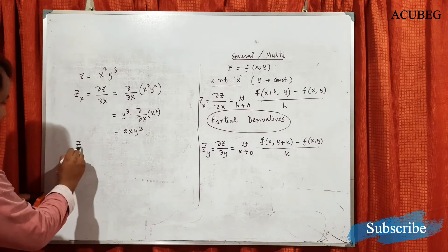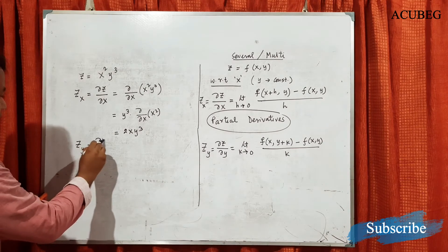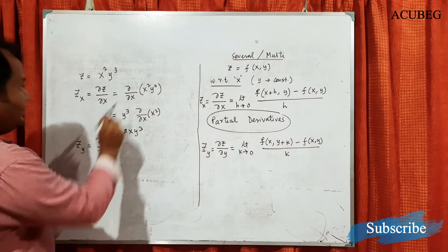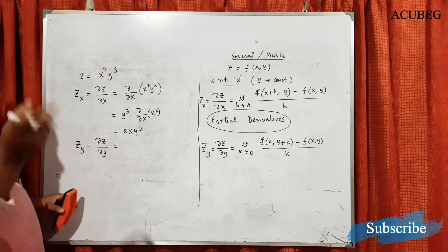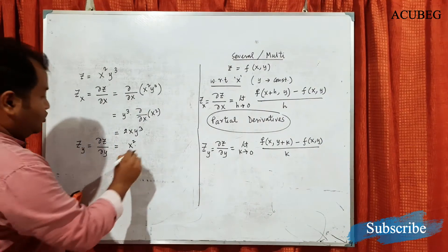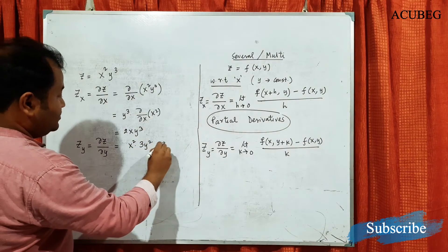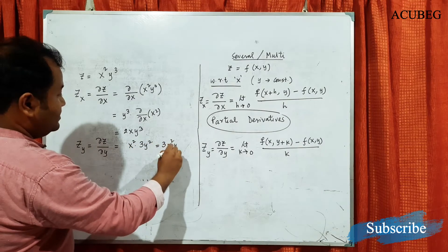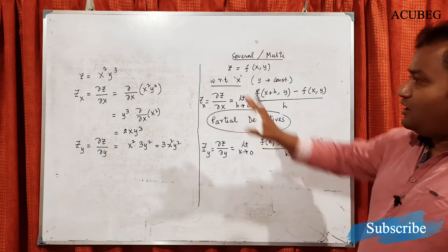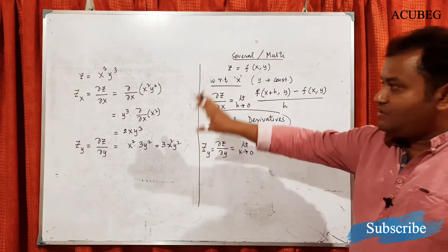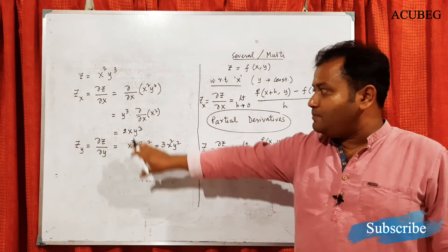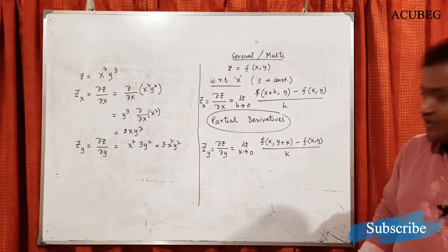Now if I want to find zy, that is del z / del y, that means derivative with respect to y, so x will be constant. x² is a constant, and the derivative of y³ is 3y², so it is basically 3x²y². Seeing this example you can understand how to find the partial derivative using the standard derivative formulas, without needing the definition.